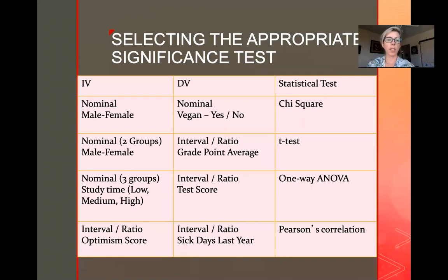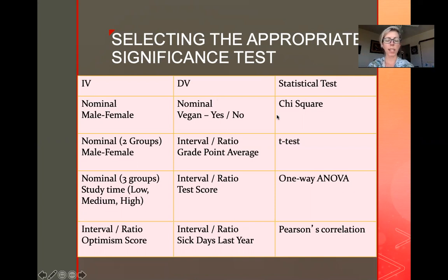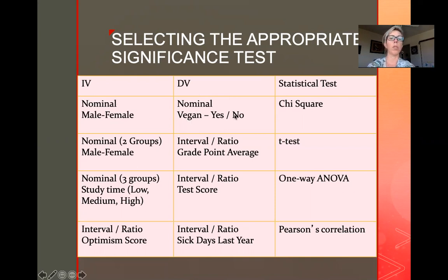Here's a table to help you figure out what kind of tests you might need. In each box, the top label tells you the type of variable and underneath there's an example. A nominal scale might be male/female or vegan yes/no — there's not 'two vegan' versus 'five vegan,' just yes or no. What you would do for that is a chi-square test.